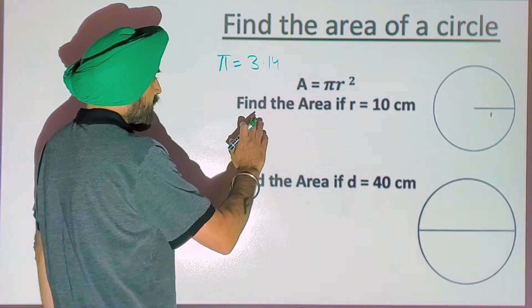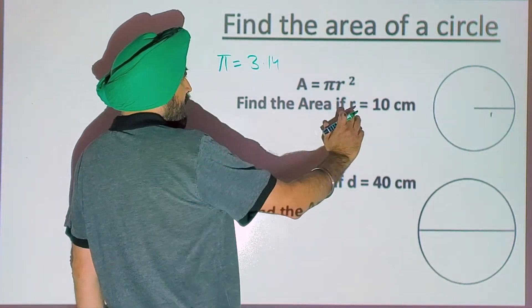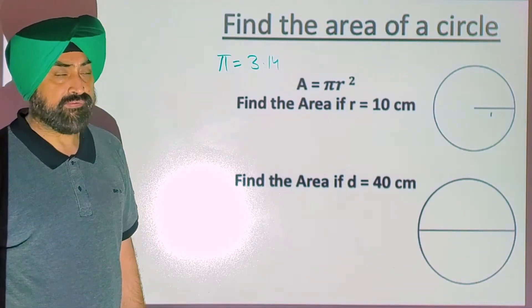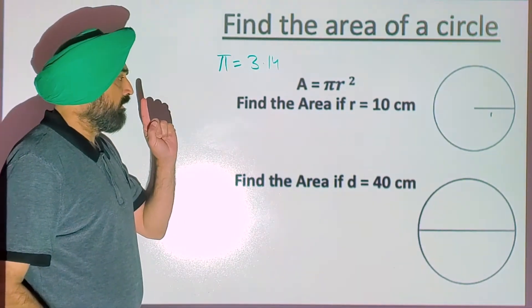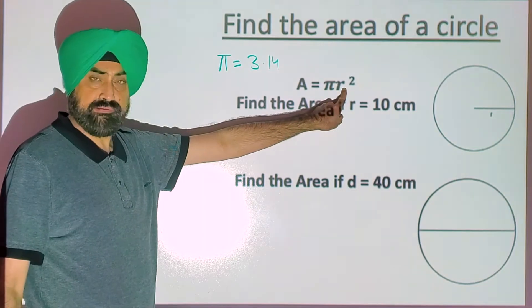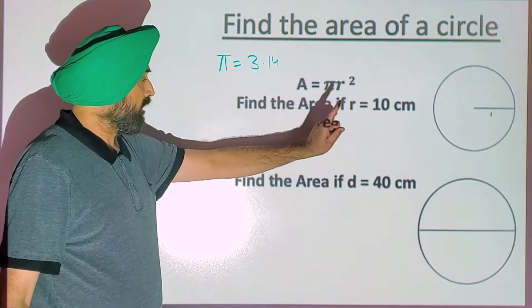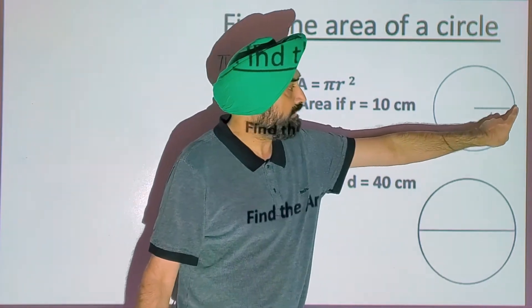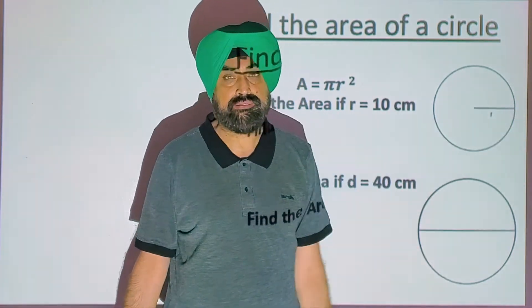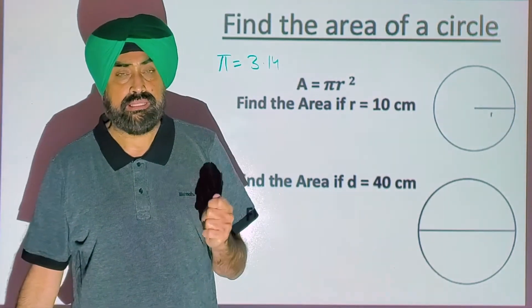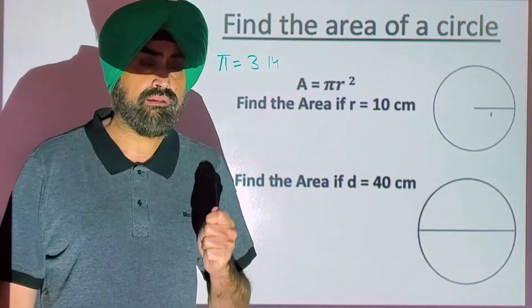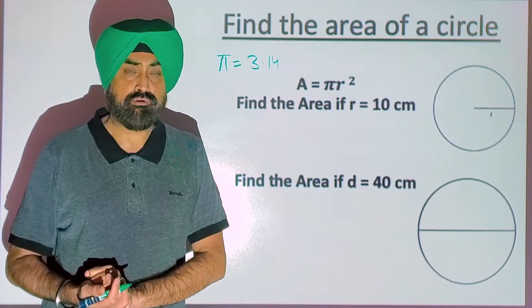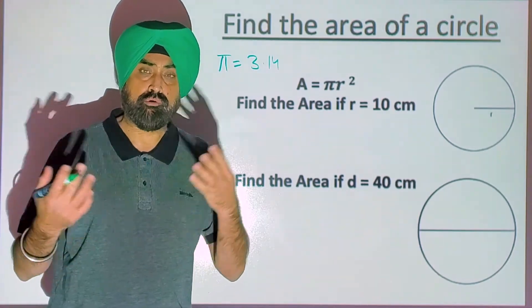Let's see: if radius is given and you want to find the area of a circle, remember — to find area, we need the radius squared. The radius is the length from the center of the circle to any point on the circle. There could be one radius, there could be more.